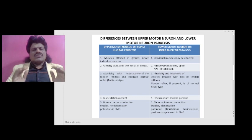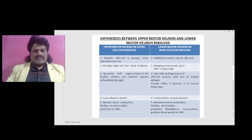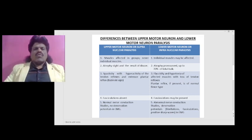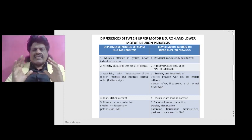So the differences between upper motor neuron and lower motor neuron paralysis — upper motor neuron or supranuclear paralysis versus lower motor neuron or infranuclear paralysis. But what exactly constitutes the upper motor neuron and what exactly constitutes the lower motor neuron?